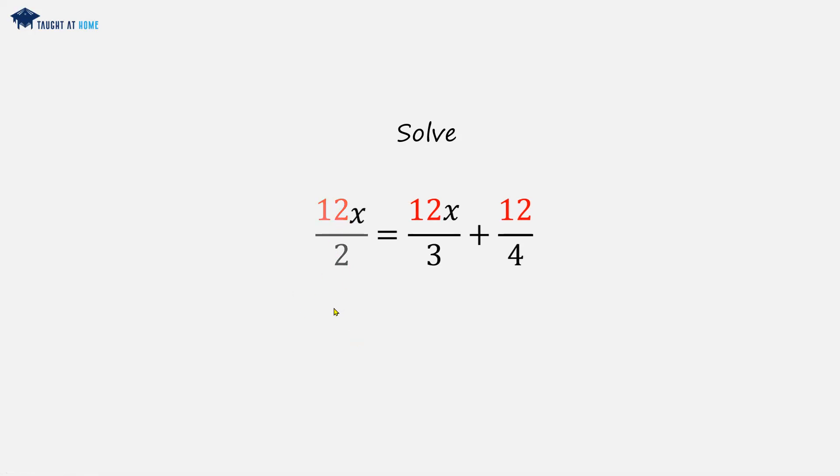12 over 2 is 6, so we'll have 6x on the left hand side. On the right hand side, 12 over 3 is 4, so that's 4x. And 12 over 4 is 3.